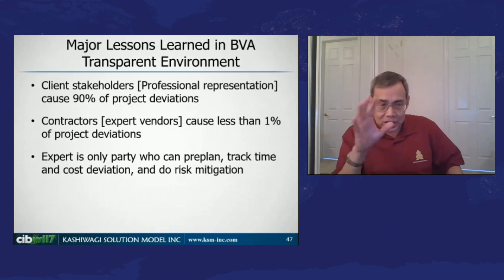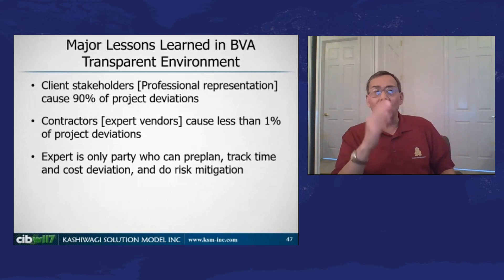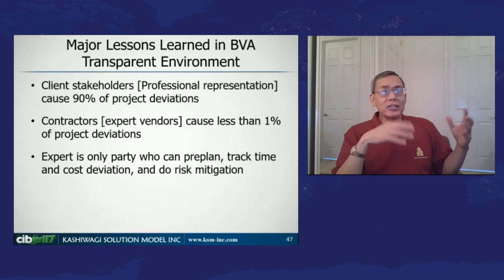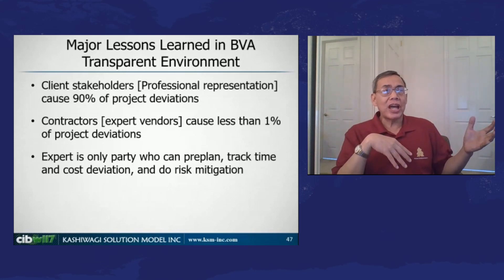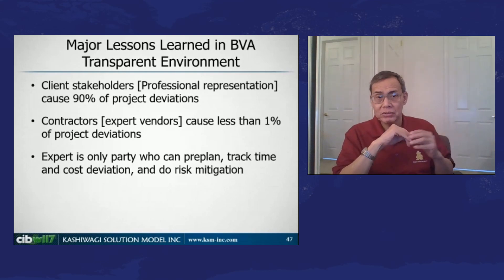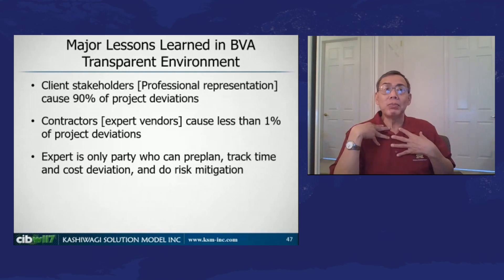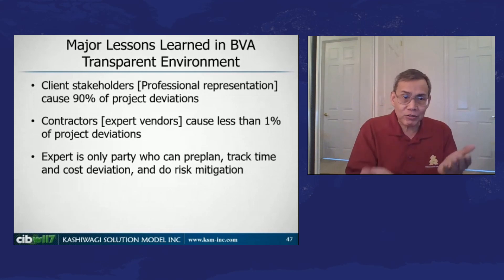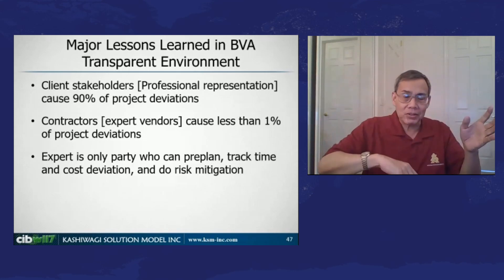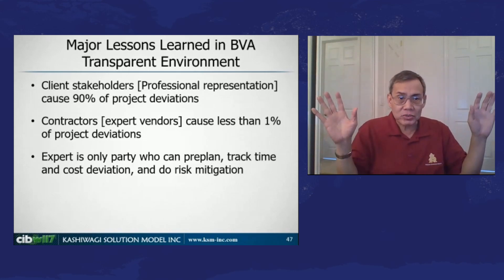We actually came to the conclusion — if what we're seeing over and over on every test was true, and contractors could actually be identified as causing less than 1% of the project risk and cost — that we're going to make the simple assumption that the expert can actually tell the difference. The expert can actually see into the future, and the expert doesn't cause risk.